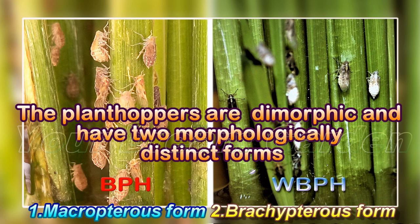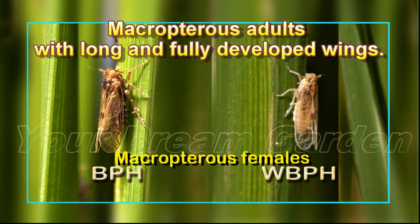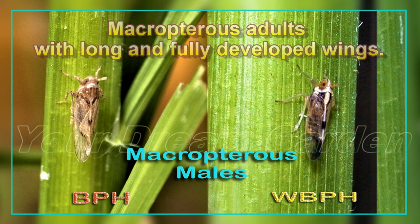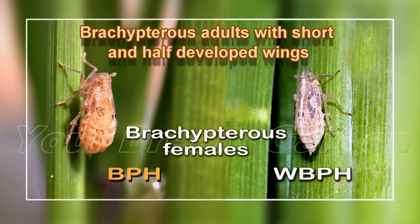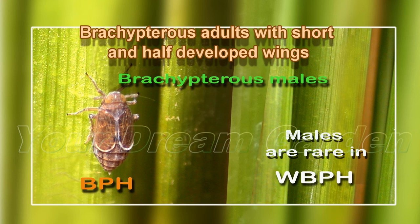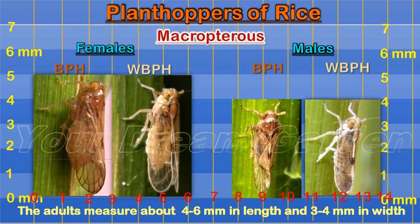The plant hoppers are dimorphic — they have two morphologically distinct forms: one, the macropterous form, and two, the brachypterous form. Macropterous adults have long and fully developed wings, while brachypterous adults have short and half-developed wings. WBPH males are rare. The adults measure about 4–6 mm in length and 3–4 mm in width. WBPH brachypterous male adults are rare.